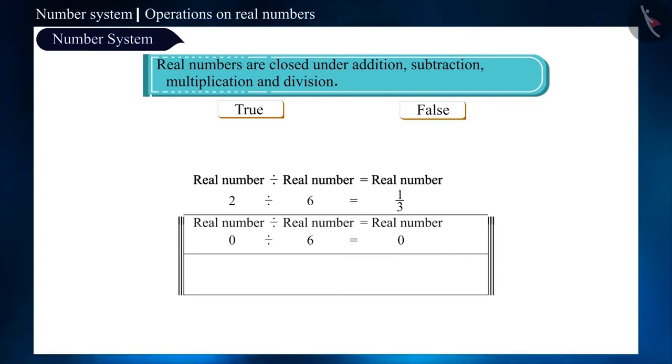But if we take 0 instead of 6 and divide 2 by 0, then the number we get is undefined. This means here we did not get a real number. So is the given statement correct? Think about it and confirm your answer.